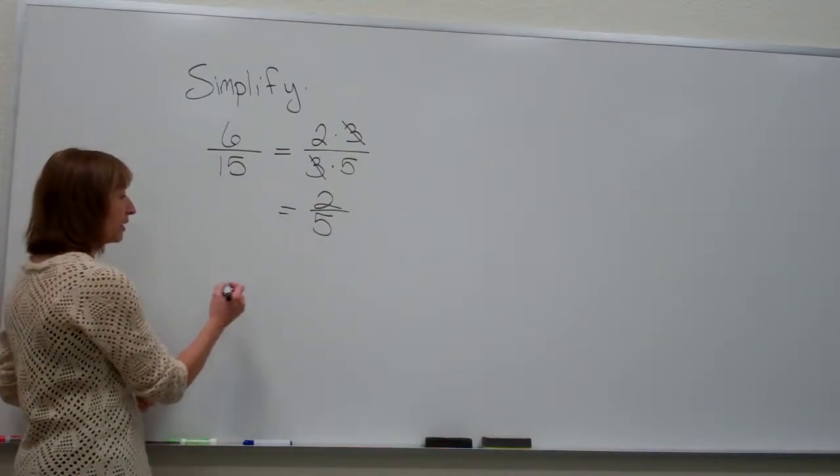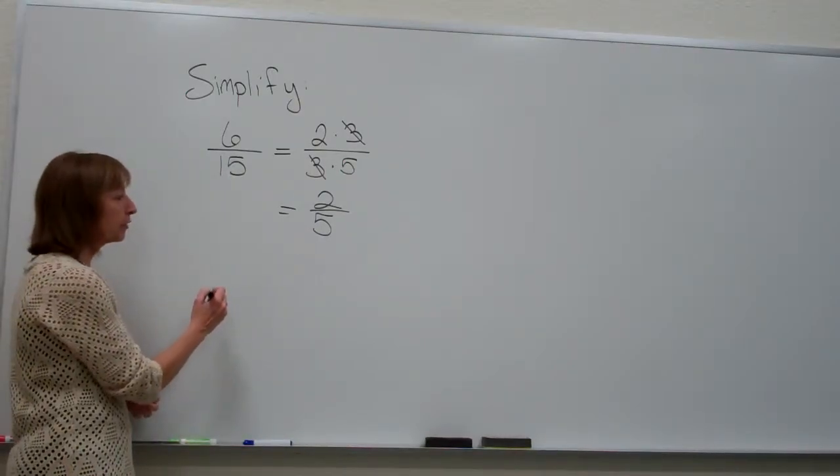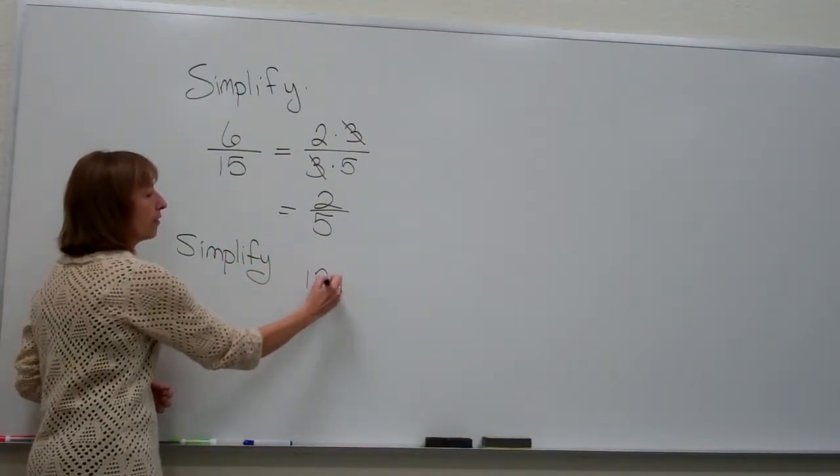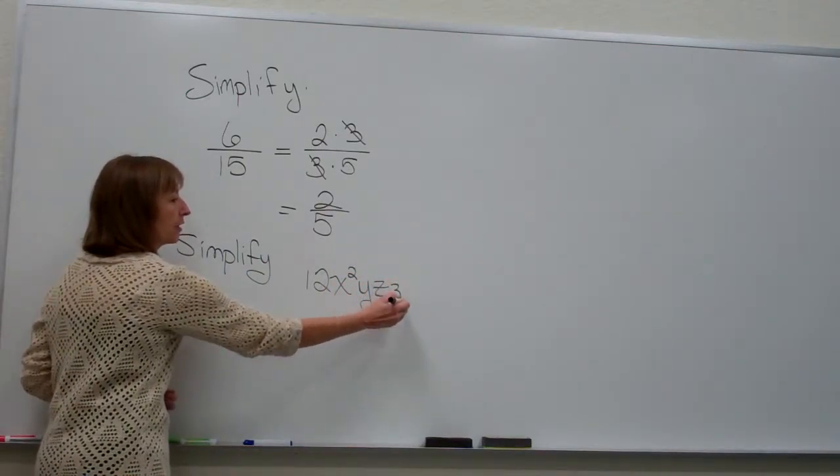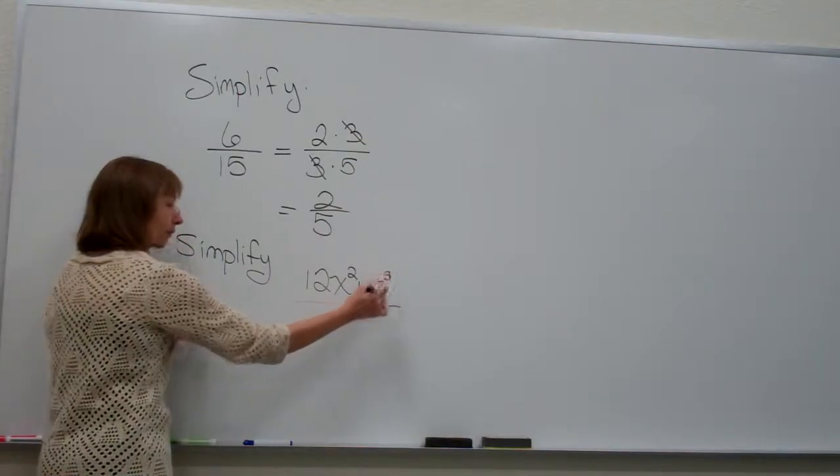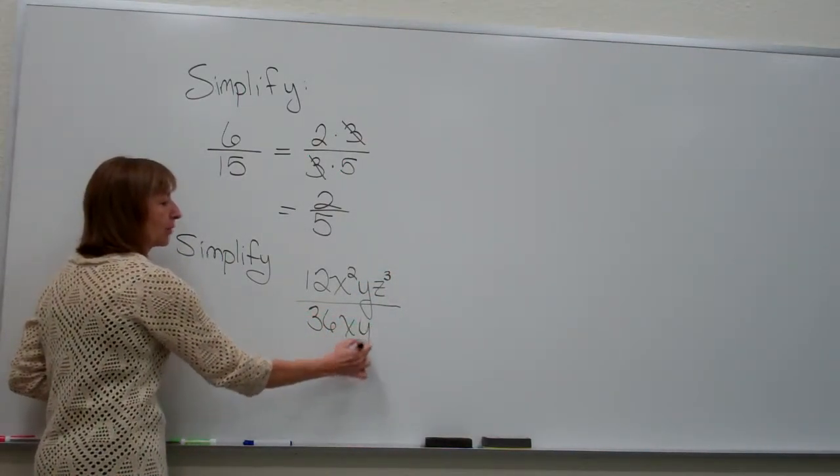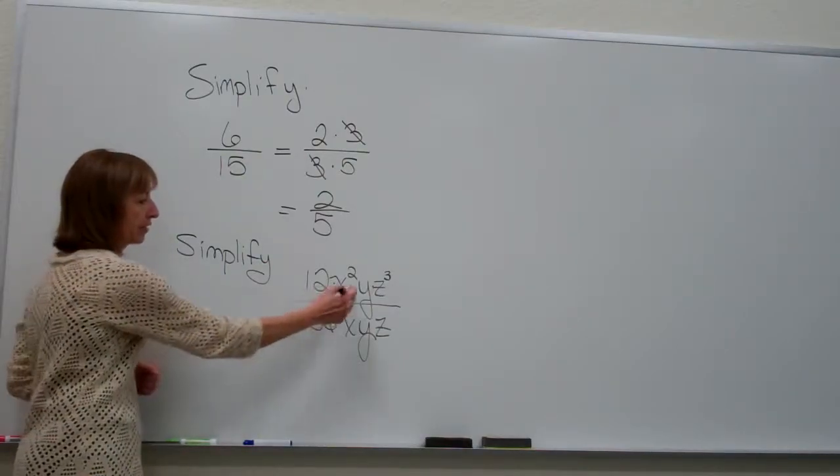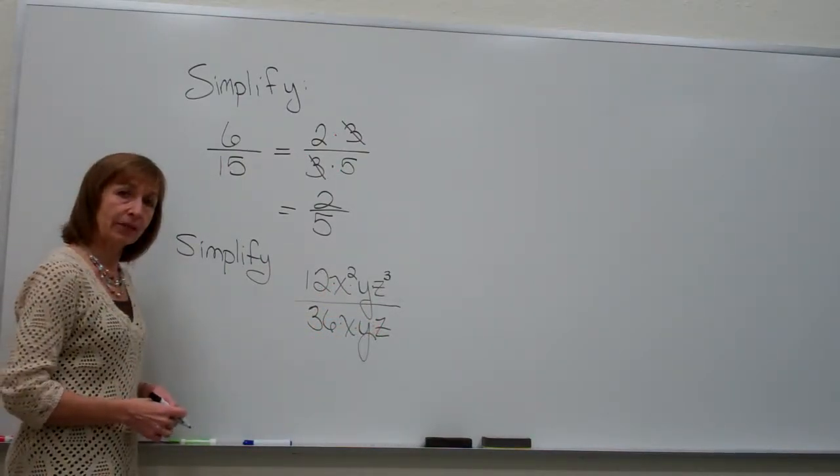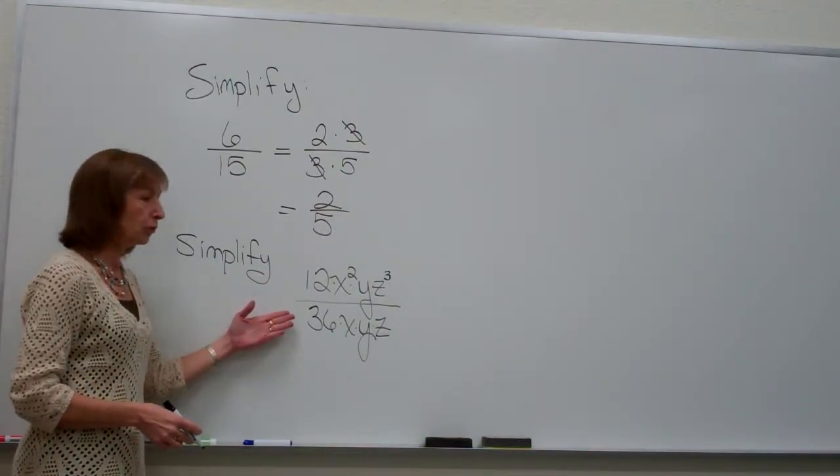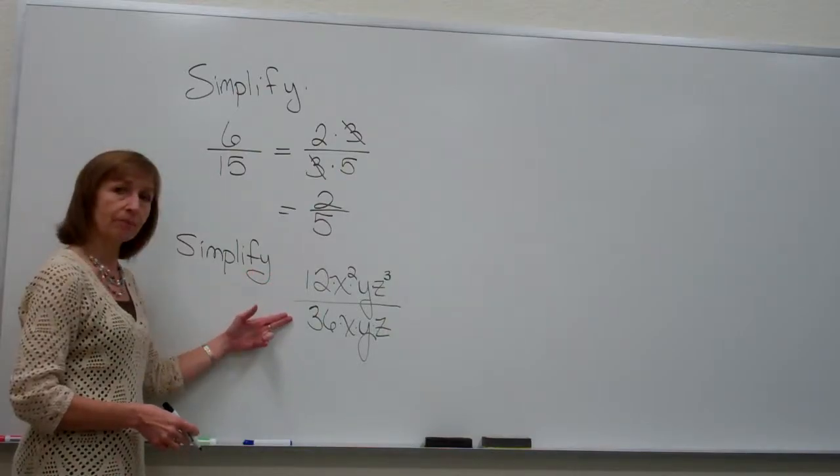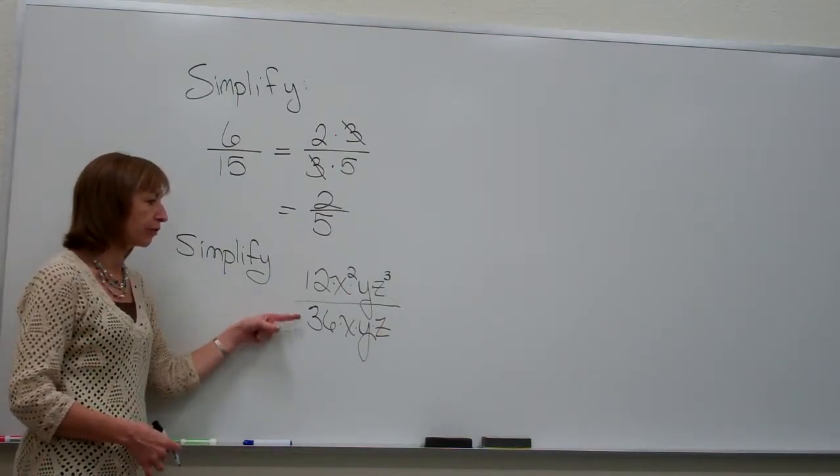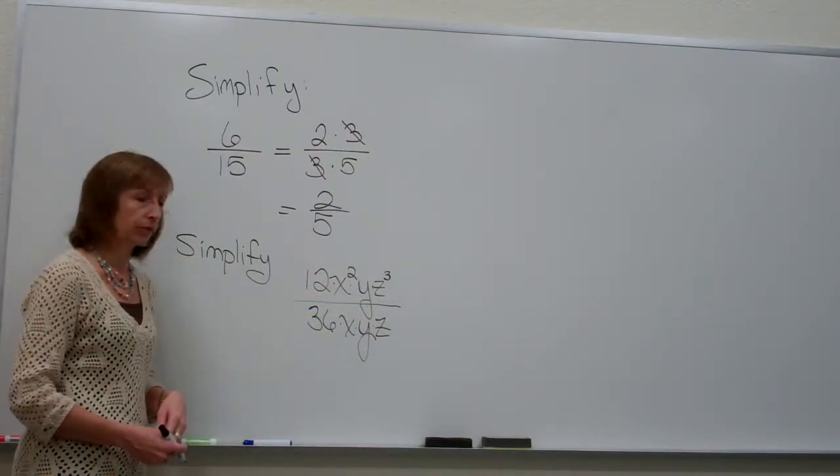Similarly, when we used our rules of exponents in previous work, if it said to simplify 12x²yz³ over 36xyz, I notice that I have multiplication all between the numerator factors, and multiplication all in the denominator as well. So I can simplify this fraction by removing the common factors to the numerator and denominator. Numerically, I simplify the numerical coefficients just as I would any numerical fraction, and the variable factors we use are rules of exponents.